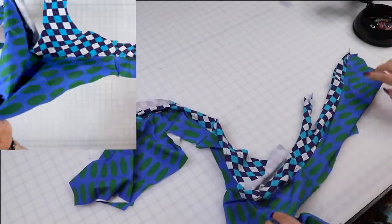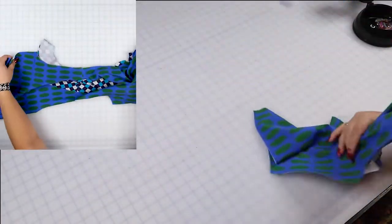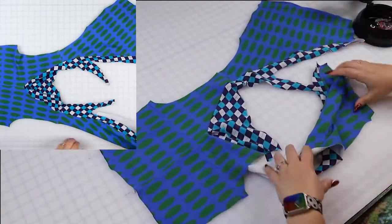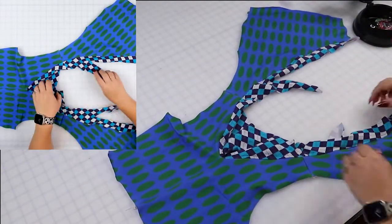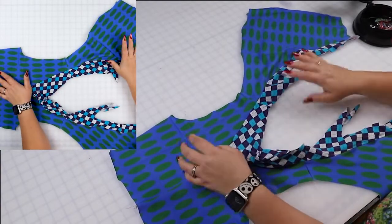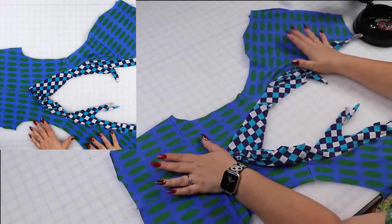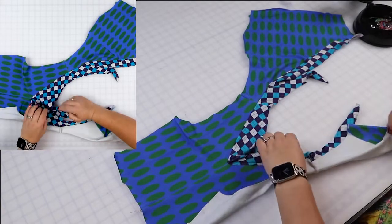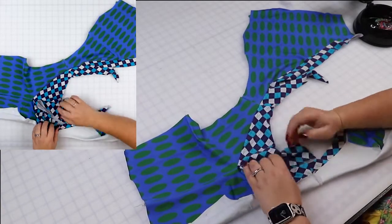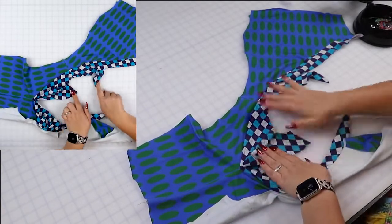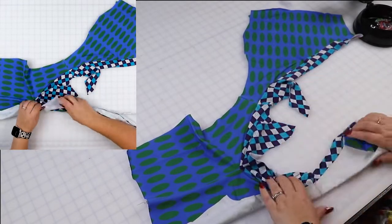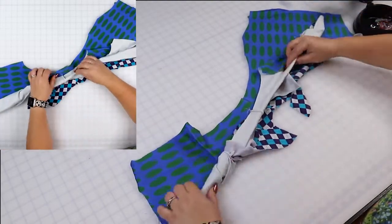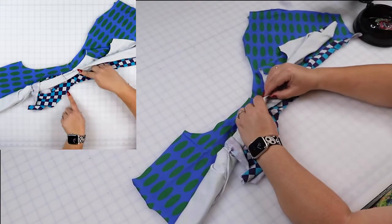So let's do the burrito roll method for the sleeveless option. So we're going to start by placing your fabric with the right side up. Then we're going to take one side and we're going to burrito roll it. So keep your facing from this side out of the way. As you can see, it's out of the way. So with this part right here, we're going to roll so we can fit it right in here. This is why it's called the burrito roll.